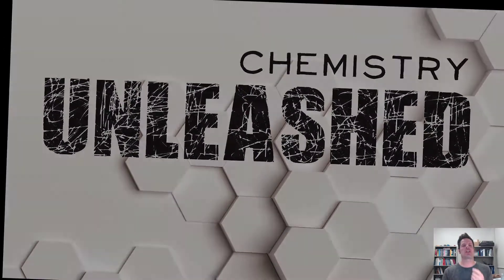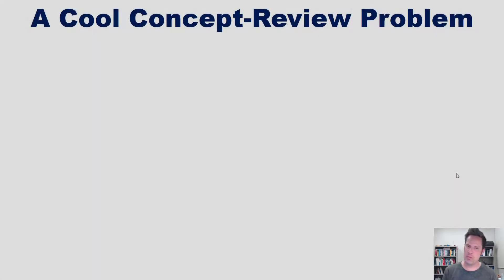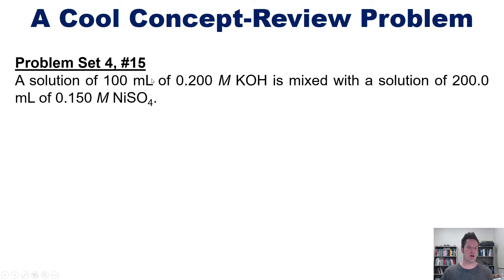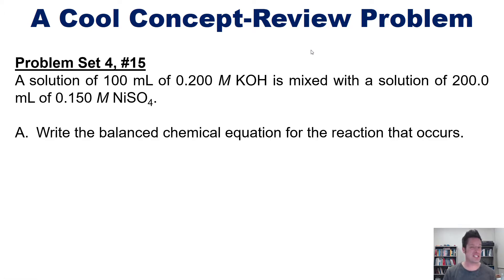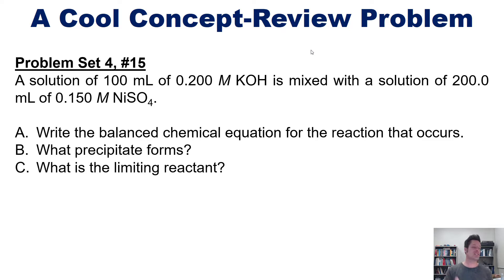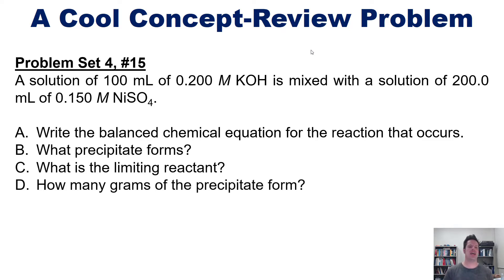I figured we'd end this chapter with a cool concept review problem taken from my students' problem set. You have a solution of 100 milliliters of this concentration of KOH and mix it with a solution of 200 milliliters of this concentration of nickel sulfate. I want you to write a balanced chemical equation for the reaction that occurs, then tell me what precipitate forms. Next, what is the limiting reactant? And last, how many grams of that precipitate form?